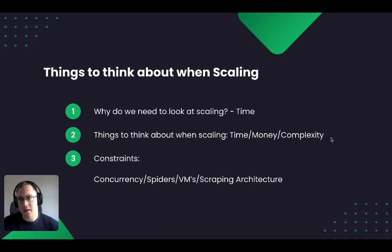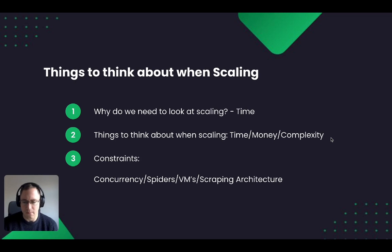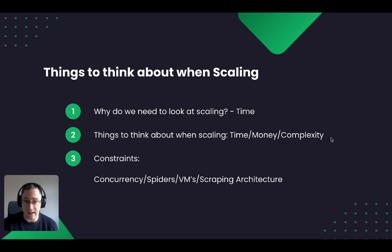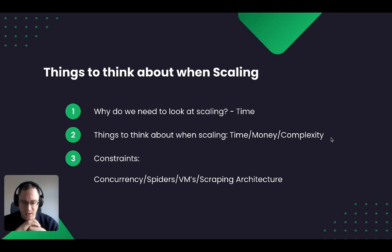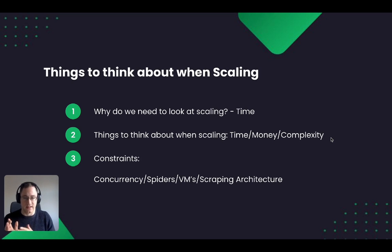There are a few things to think about when looking at scaling. First, why would you be looking at scaling? A good example is if you want to scrape a million Amazon pages but you don't want that to take one day — you want it to only take one hour. To do that, you have to look at how you can have all those million pages work across multiple different spiders so the results are done in less than an hour.